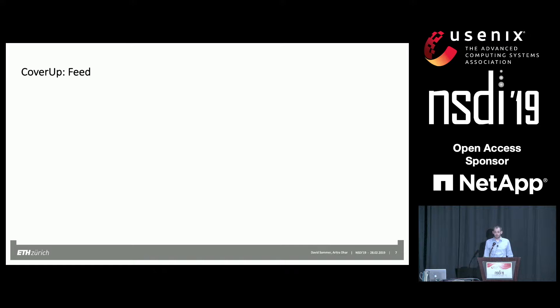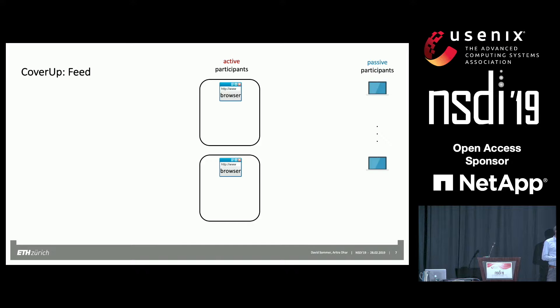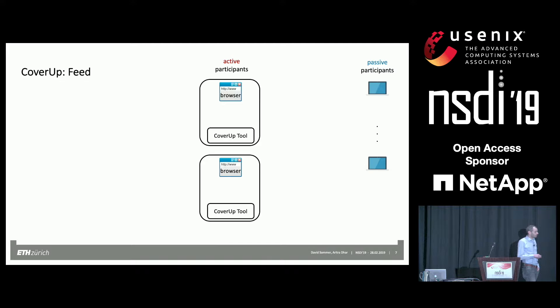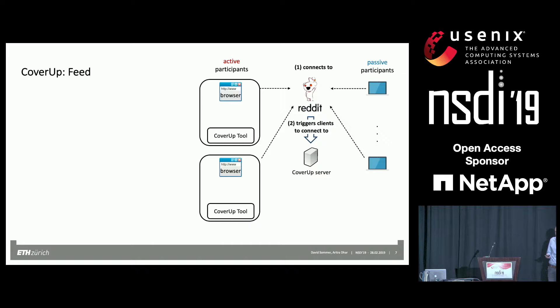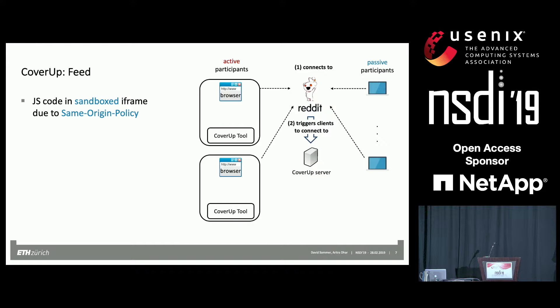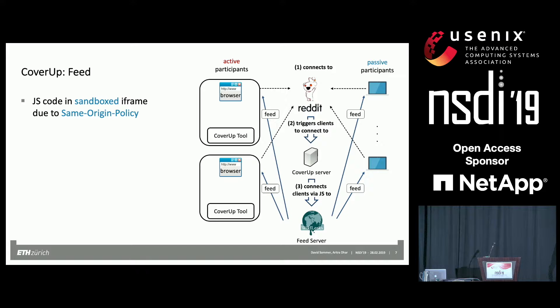I'll now explain the unidirectional part of Cover-Up, which we call feed. Active and passive participants are identical, except that active participants have obtained the Cover-Up tool out of band. Both connect to Reddit. Reddit includes an iframe in its HTML page that fetches a JavaScript snippet from a server we call the Cover-Up server. If Reddit and the Cover-Up server have different domain names, the JavaScript context is isolated due to the same-origin policy that most modern browsers enforce. This JavaScript snippet then makes requests to the feed server — in our example, WikiLeaks — which sends the feed to both active and passive participants. For passive participants, they are done; active participants can use the Cover-Up tool to extract the feed from the browser's cache.